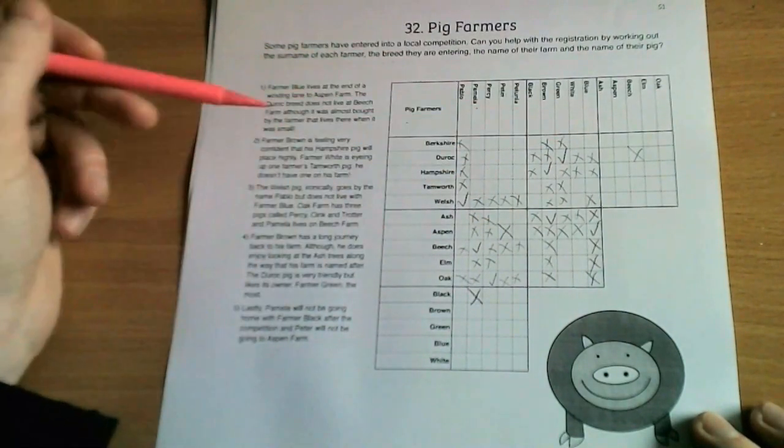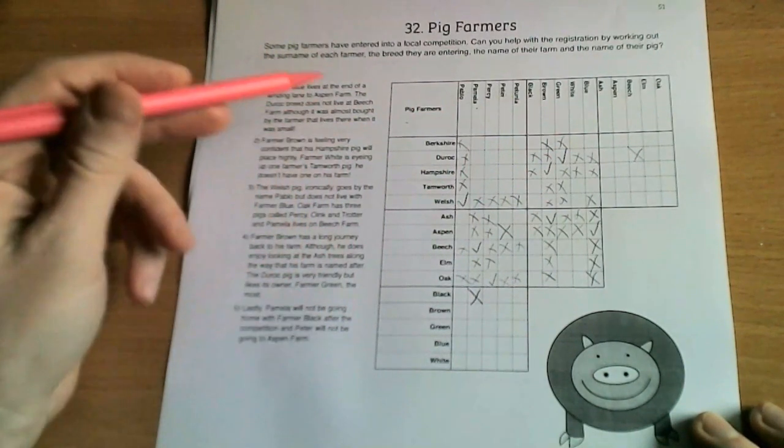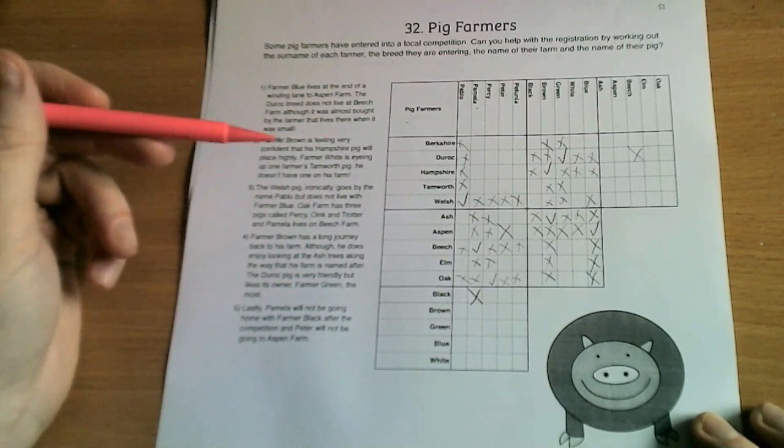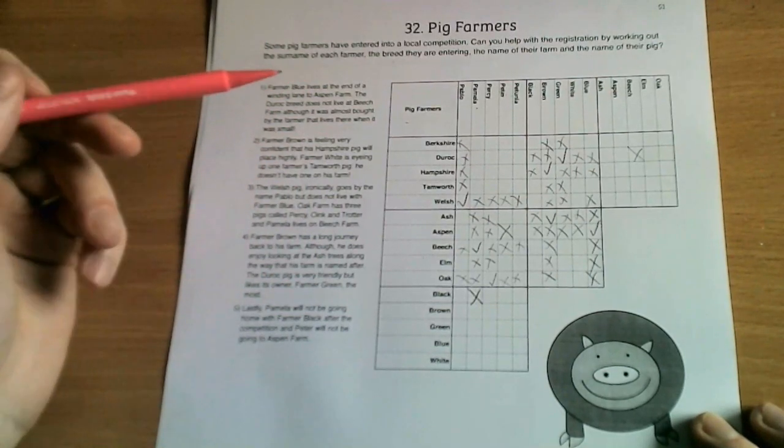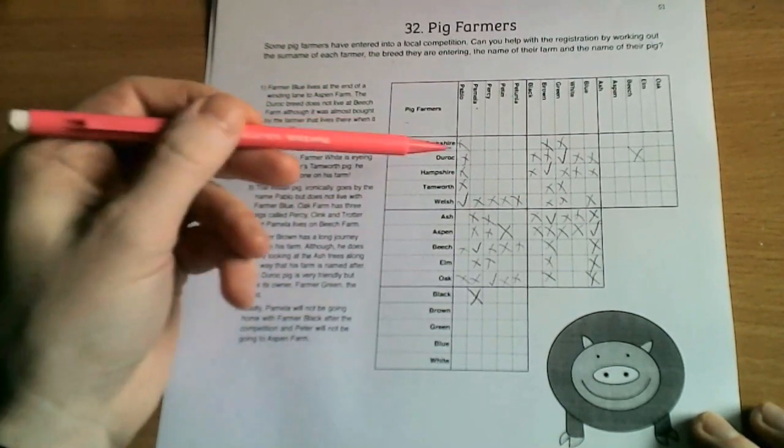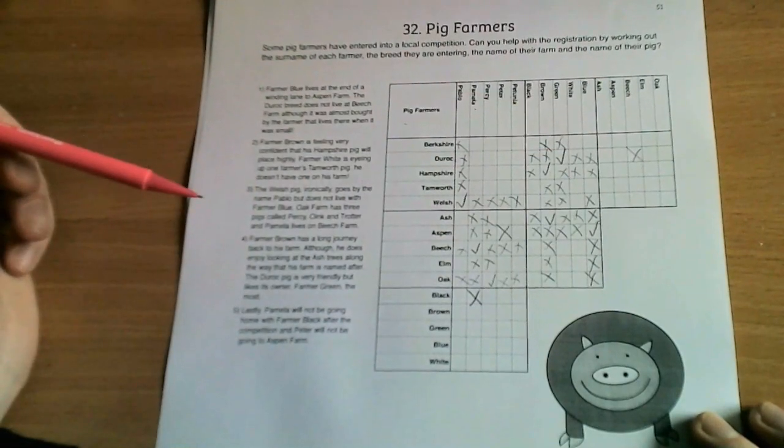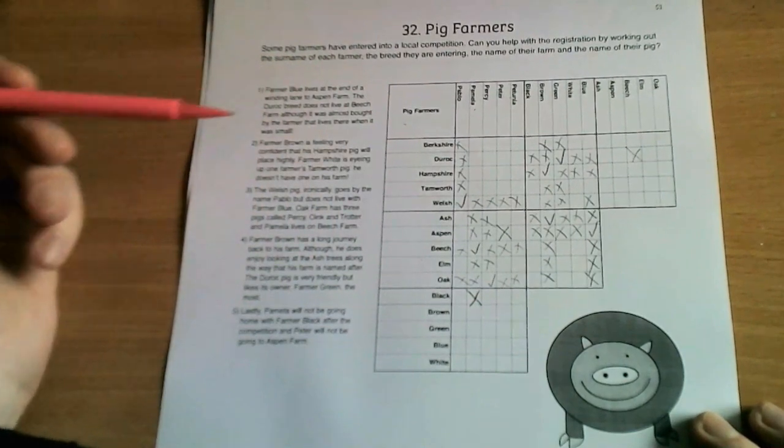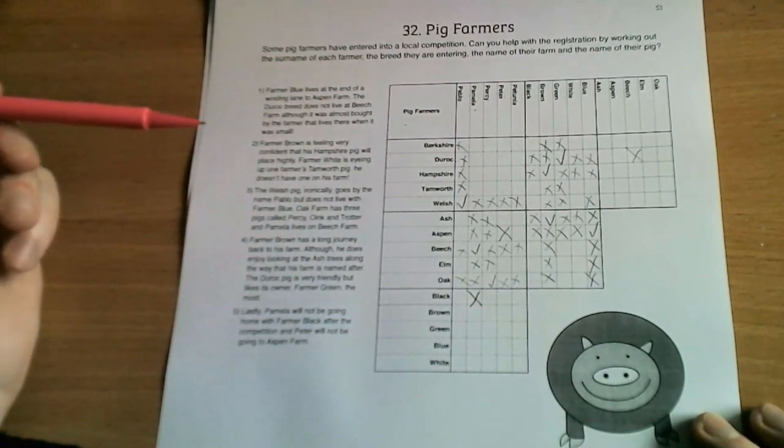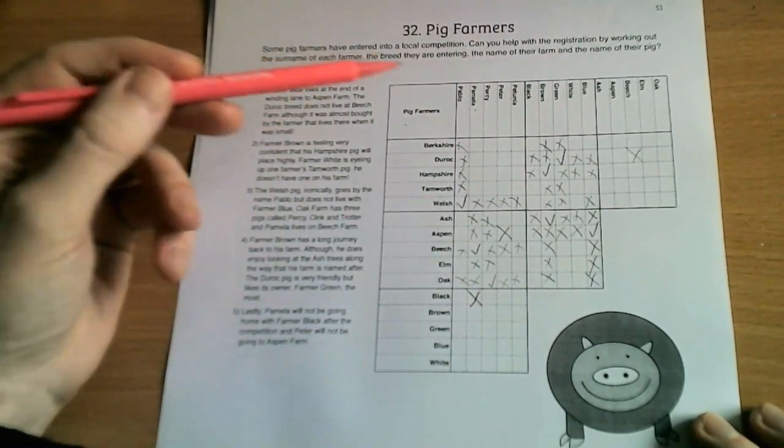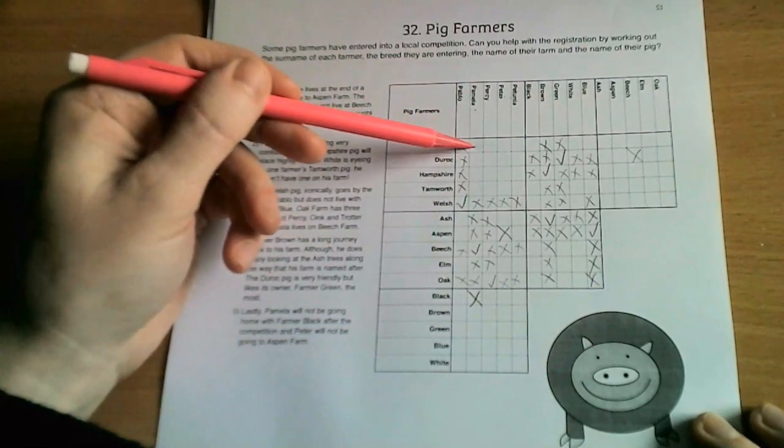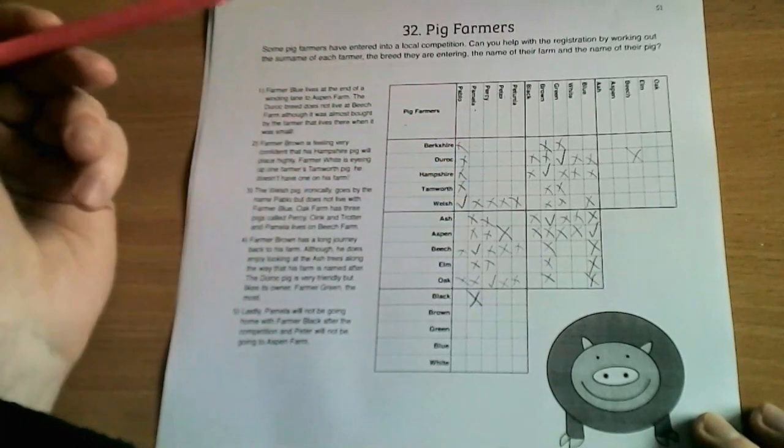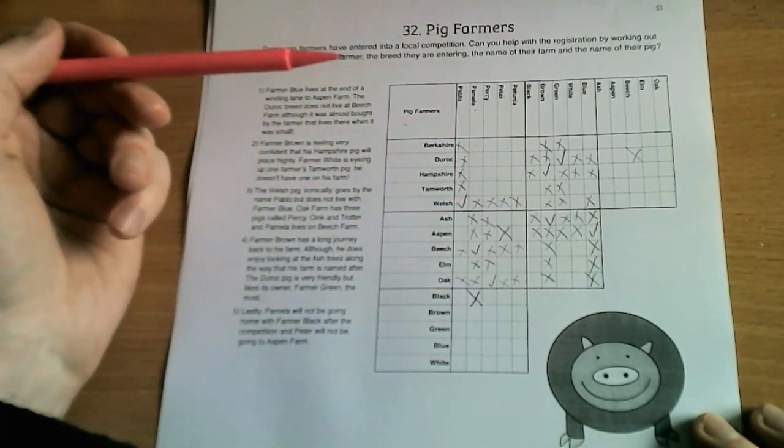The next step is to look for things that must be linked or cannot be linked, which we can do either by reading the clues again or looking through the table. So for instance, if we know that A is B and A is C, therefore we know that B is C. If we know that Berkshire is linked to Pamela and Pamela is linked to Beech, then we know that Berkshire is linked to Beech.